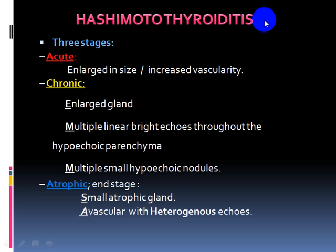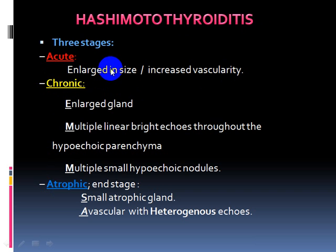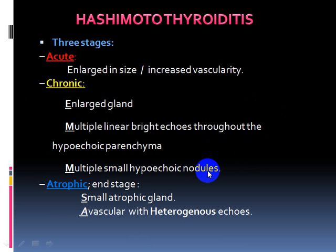The next disease is Hashimoto's thyroiditis, an autoimmune disease that occurs in three stages: acute, chronic, and atrophic. In the acute stage, the whole gland is enlarged in size with increased vascularity, and may be misdiagnosed as Graves' disease. In the chronic stage, the gland remains enlarged but shows multiple linear bright echoes throughout hypoechoic parenchyma and multiple small hypoechoic nodules. Finally, in the atrophic end stage, the gland becomes small, atrophic, avascular, and heterogeneous.